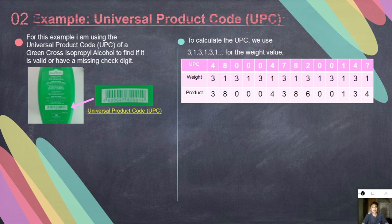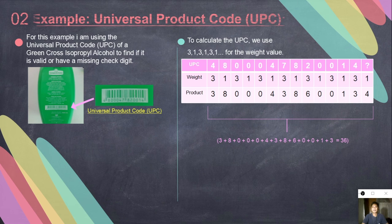The product is 4 times 3 equals 12. The same procedure on the first and second, 1 plus 2, we separate the product of 4 times 3 equals 12. 1 plus 2 equals 3, 8 times 1 equals 8, and so on and so forth. We add the product: 3 plus 8 plus 0 plus 0 plus 4 plus 3 plus 8 plus 6 plus 0 plus 0 plus 1 plus 3 equals 36.